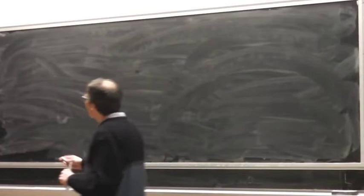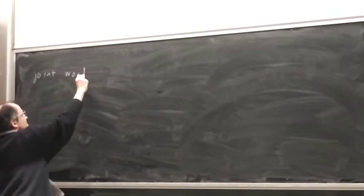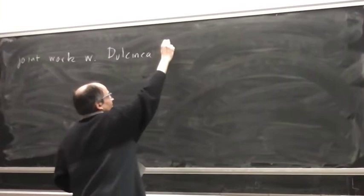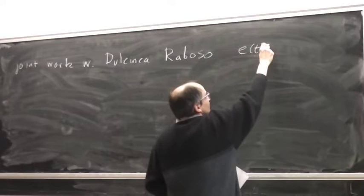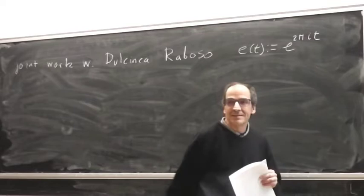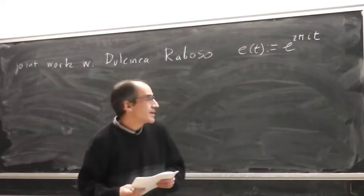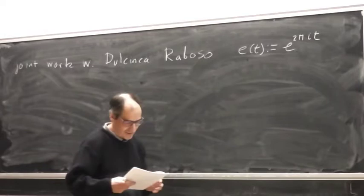This is a talk about joint work with Sinai Robba. I am going to use an abbreviation that is quite standard in analytic number theory but perhaps not so familiar for you — it is just putting the complex exponential as it is.